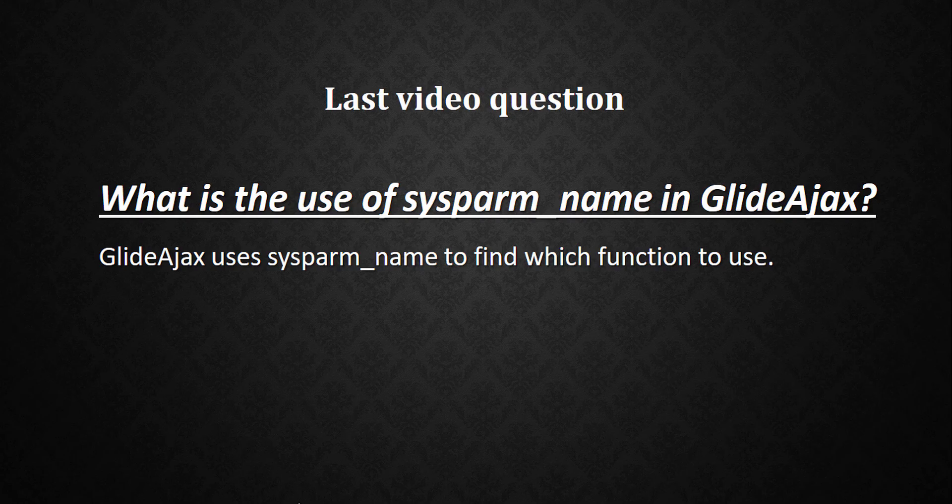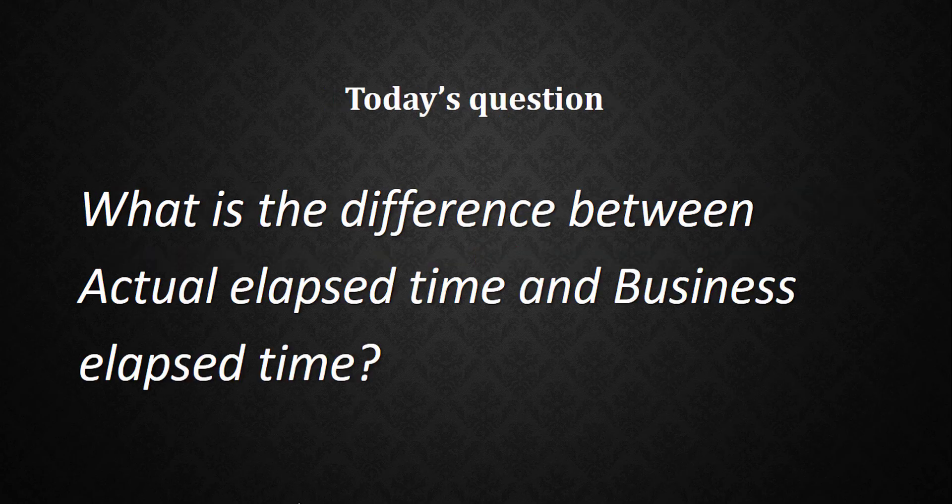In the last video I asked about the use of sysparm_name in GlideAjax. GlideAjax uses sysparm_name to find which function to use — when using the GlideAjax API, we pass sysparm_name as a parameter followed by the function name from the Script Include that we want to call. Today's video question is: what is the difference between actual elapsed time and business elapsed time? Please write your answer in the comments and I'll give the answer in the next video. Thank you, God bless you all.